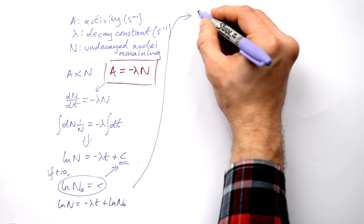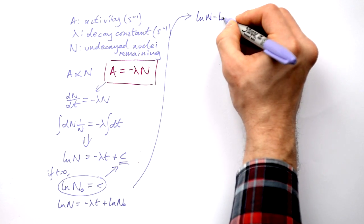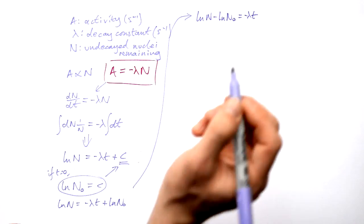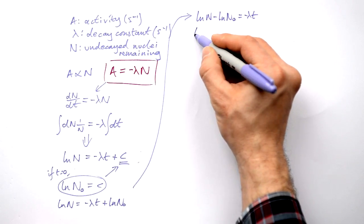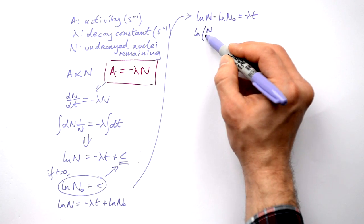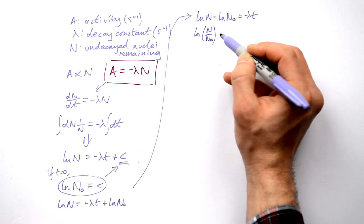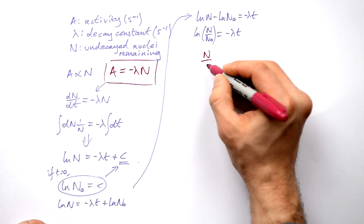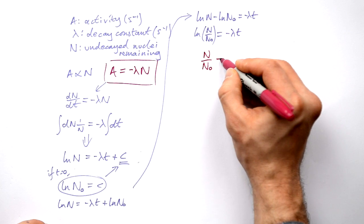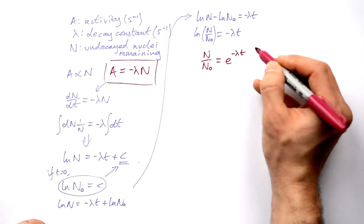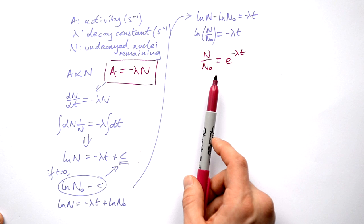Putting all the logs on one side, we end up with ln N minus ln N₀ equals minus lambda t. Using our log identity, subtracting logs is the same as taking the log of one divided by the other. Taking the exponential of both sides, we end up with N over N₀ equals e to the minus lambda t. So we've finally arrived at our final equation.